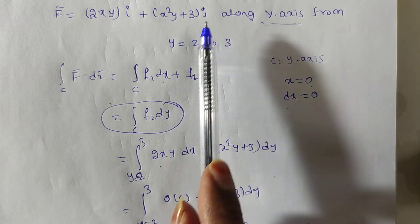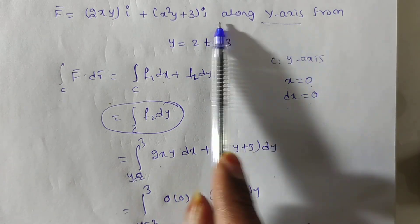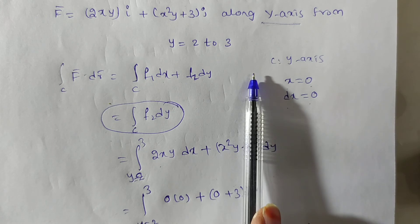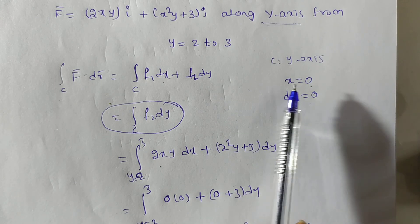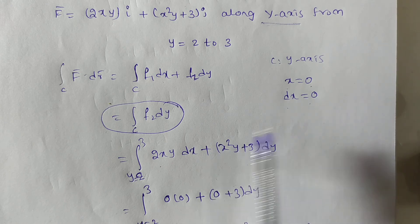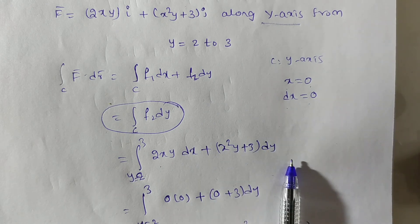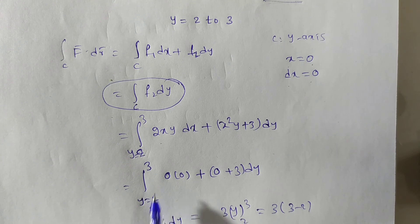If suppose they are given in terms of z, like plus 3k or some k, then you will get f3 dz. So dz is also 0 along the y-axis. Other variables are 0 only. In that case, dx is 0, dz is also 0. Now you have to integrate with respect to y, with the limits 2 to 3.